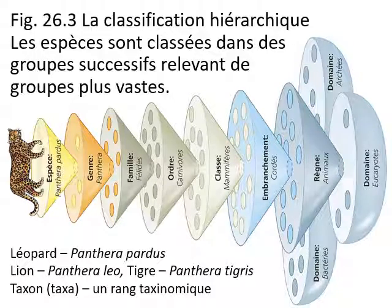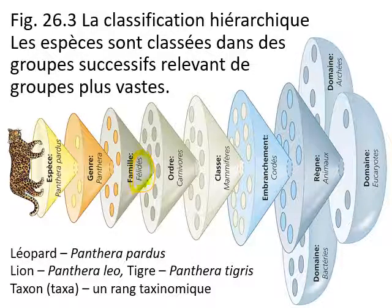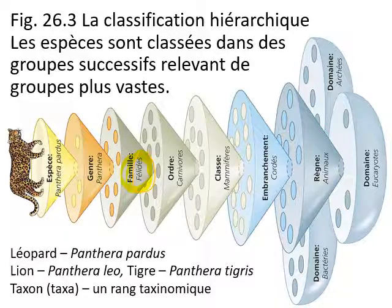To better describe organisms and place them in categories that are related, we use a scheme called the taxonomic classification. A taxon is a group of organisms — for example, the domestic cat is one taxon within the family Felidae. The leopard is another taxon within this group.